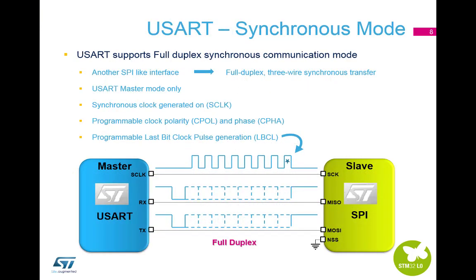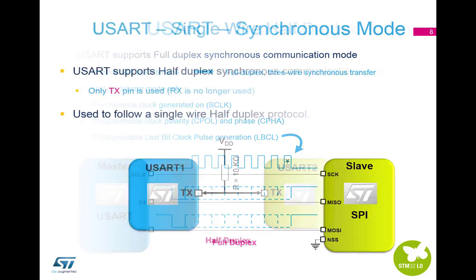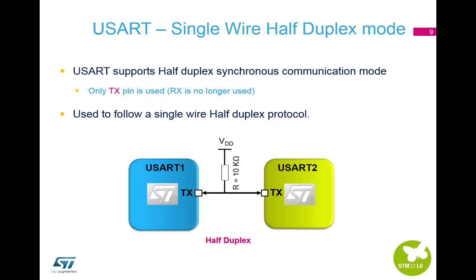In synchronous mode, the USART can be used to control bi-directional, full-duplex, synchronous serial communications in master mode. The USART transmitter works exactly like in asynchronous mode, but the clock is synchronised with the TX according to the CPOL and CPHA settings. The USART also supports single-wire, half-duplex mode.